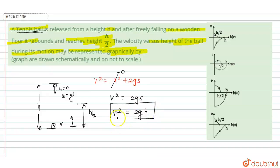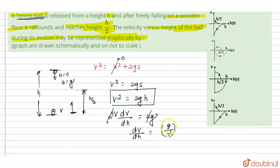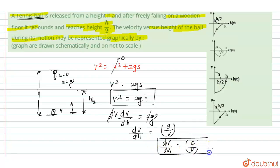Now differentiate v² = 2gh with respect to h. This gives 2v(dv/dh) = 2g, and the 2s cancel. Therefore dv/dh = g/v. Since g is constant, we can write dv/dh = c/v. This is our first key relation.